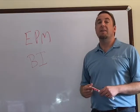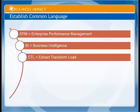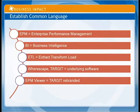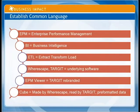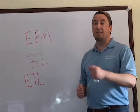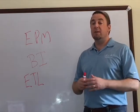Another term we'll use is ETL — Extract, Transform, and Load — which refers to moving data around. There's a tool embedded in EPM called Warescape, which is the data warehousing design tool. There's also a tool called Target, which is your visualization tool — also known as EPM Viewer. Target and EPM Viewer are the same piece. A key concept is the cube, a multi-dimensional object that lets you slice and dice on dimensions like customer, product, time, or sales rep. Target reads the cube, and Warescape feeds the cube.